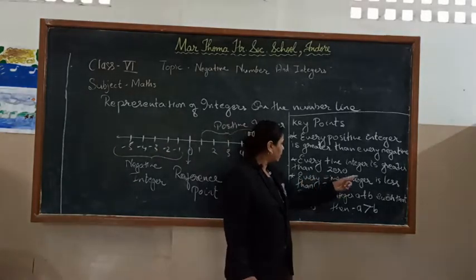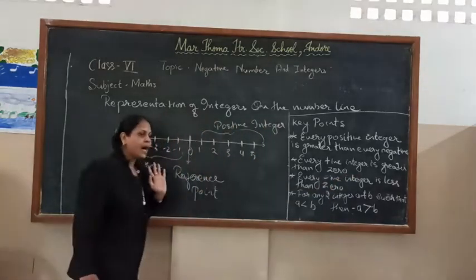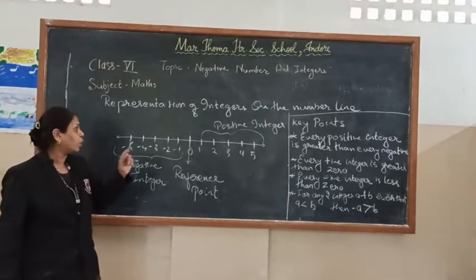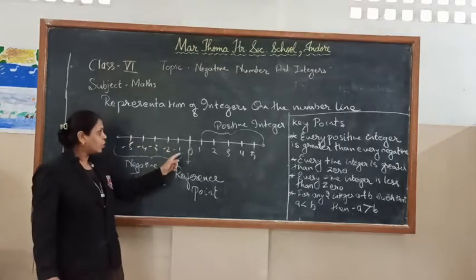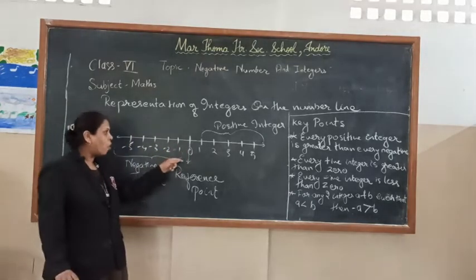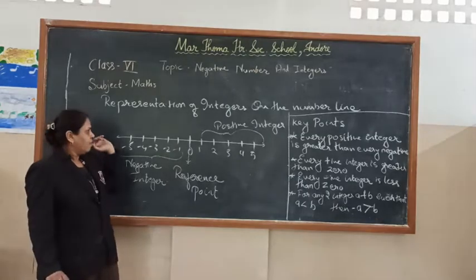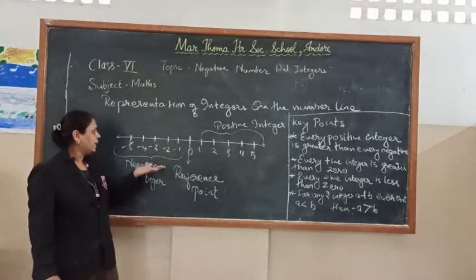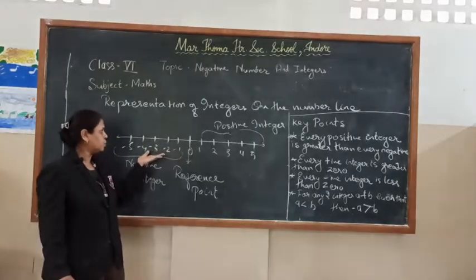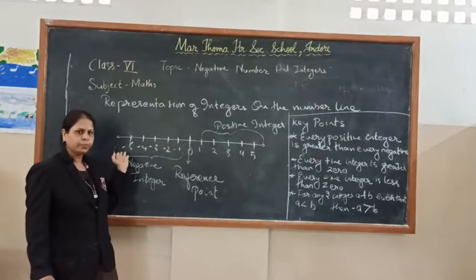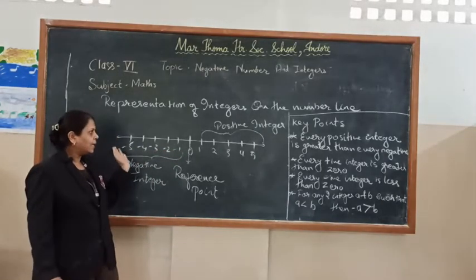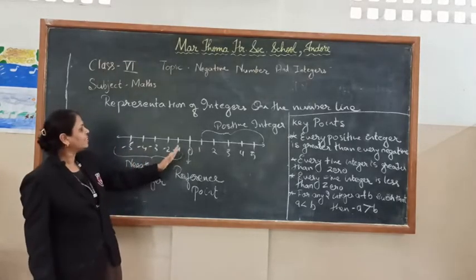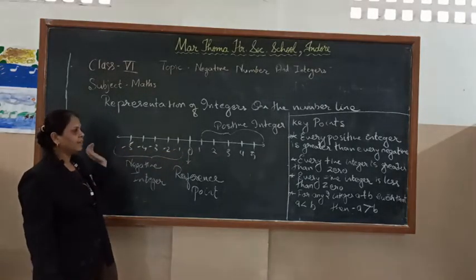The third key point: every negative integer is less than zero. Using the same concept as before, zero comes to the right of all the negative integers. No matter how large the negative integer — minus 1, minus 2, minus 3, minus 4, minus 5 — it is always coming to the left of zero. Hence, zero is greater than all of the negative integers.